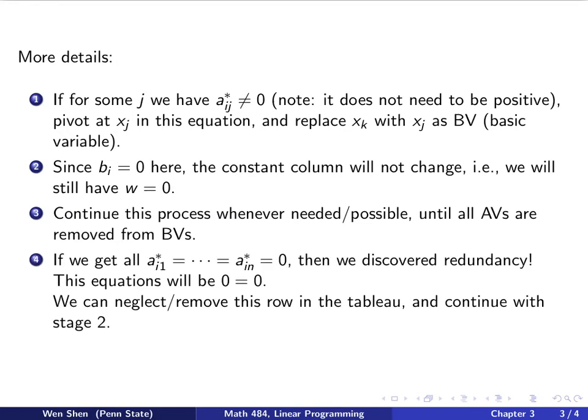And then if during this process we shall get and we shall end in the situation, that is, all the coefficients a's are 0, that means that you can't pivot and exchange the basic variables, remove the artificial variables from the basic variable. So if you have all of these, then what does it mean? Well, that means we have discovered a redundancy, because basically that equation just says 0 equals 0, right? So if that shall happen, then we can just neglect, or in principle we'll remove it, but we'll just let it stay in the tableau, and we'll completely neglect this row, and then we continue our computation. We move to stage 2 to minimize z.